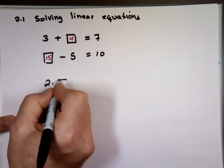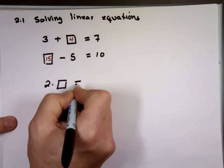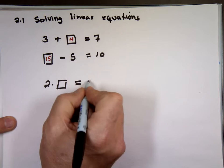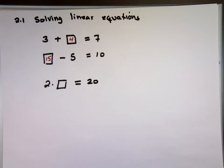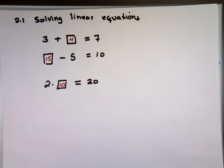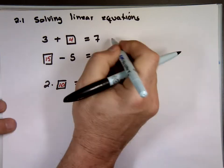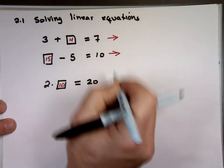2 times what is equal to 20? 10. Instead of using boxes and 'what', we're going to rewrite this problem a little bit differently. We're going to be using what we call variables.